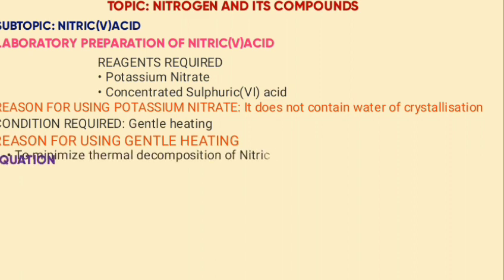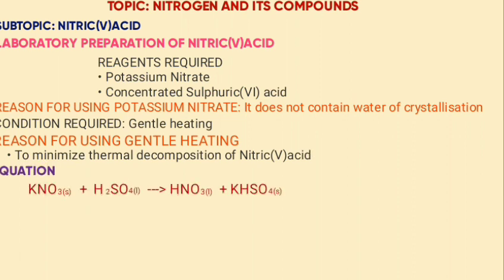The equation for the reaction is: potassium nitrate plus sulfuric acid gives nitric acid plus potassium hydrogen sulfate.